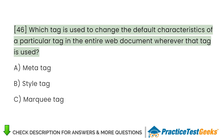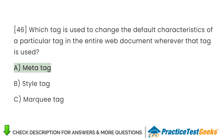Which tag is used to change the default characteristics of a particular tag in the entire web document wherever that tag is used? A. Meta tag. B. Style tag. C. Marquee tag.